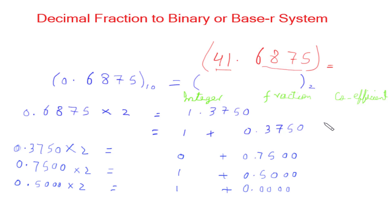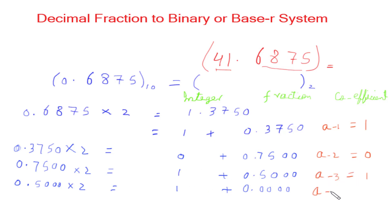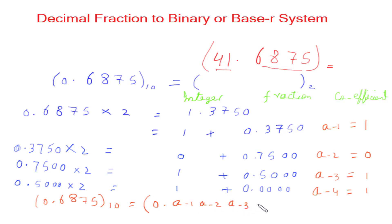The coefficients of the binary number are obtained from the integer column: a₋₁ = 1, a₋₂ = 0, a₋₃ = 1, a₋₄ = 1. So this number in base 10, expressed in binary, is 0.1011. I taught this notation in the first video of this lecture series — you can find its link in the description below.